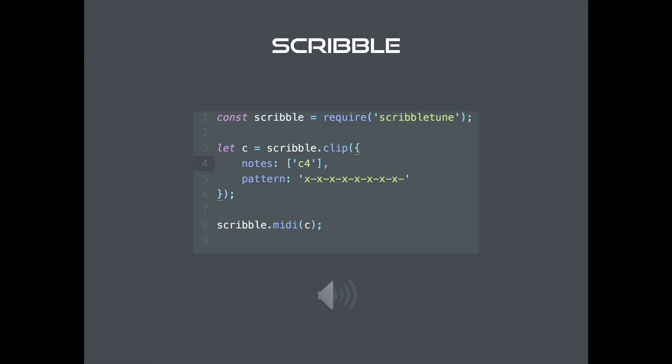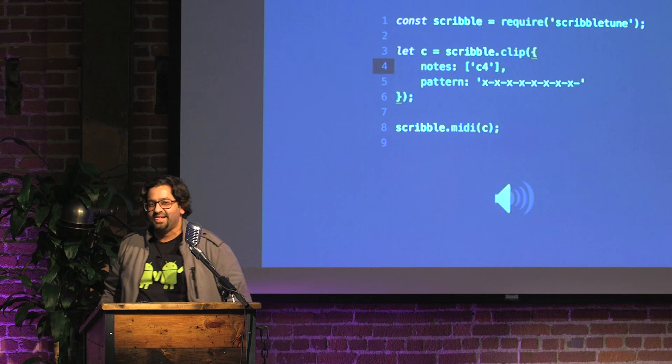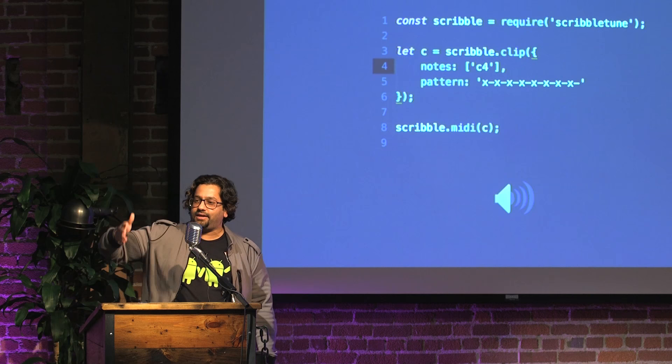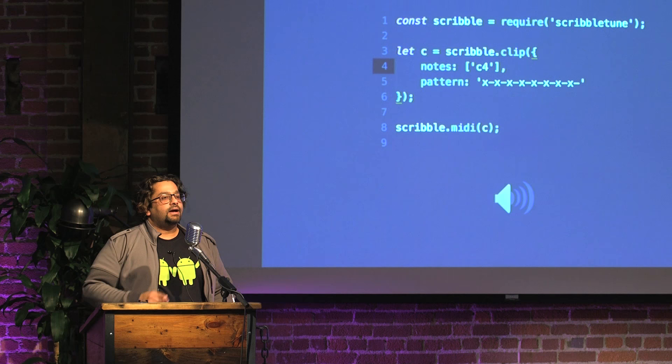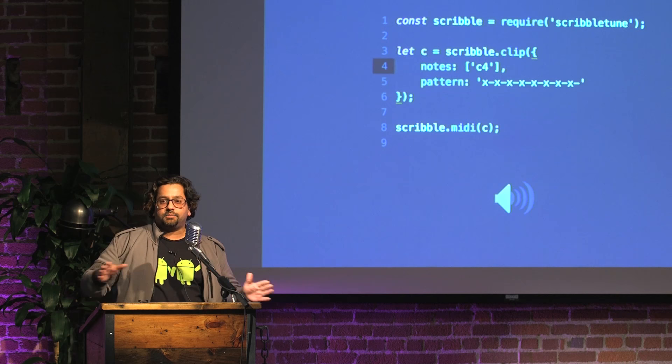What is the most common thing about electronic dance music? It's repetitive. And as engineers, what do we think when we see something repeating again and again? We automate it. You can use JavaScript to automate all that repetitive stuff — at least abstract that much out — so you can focus only on the creative aspect, the melodies or something like that.